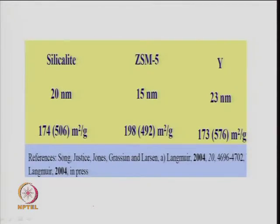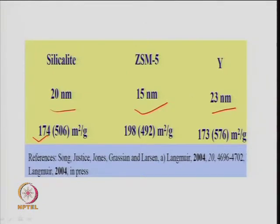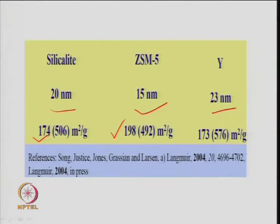One can get the idea about pore structure, porosity — all these can be determined just like in usual characterization methods. Different sizes: silicalite 20 nm, ZSM-5 15 nm, Y-type 23 nm — these are the pore or particle sizes of the zeolites. BET area: 174 m²/g and 194.8 m²/g for these materials. Total surface area can also be determined from the BET method, and different isotherms can be used for determination of surface area and pore volume of the zeolite.